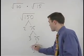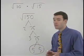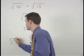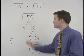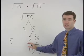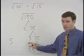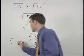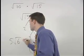Since we have a pair of 5's, a 5 will come out of the radical. The 2 and 3 that are left over will stay inside the radical, multiplying together to make 6. So we have 5 root 6.